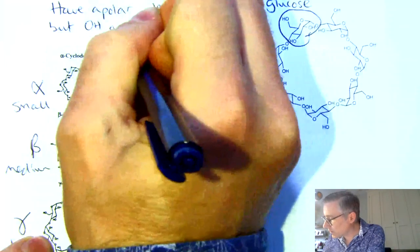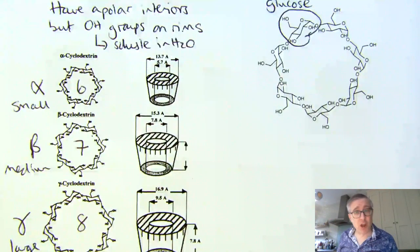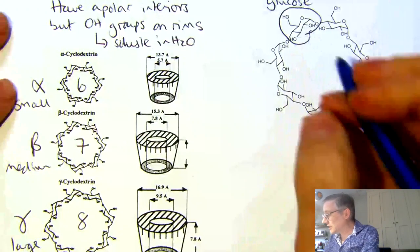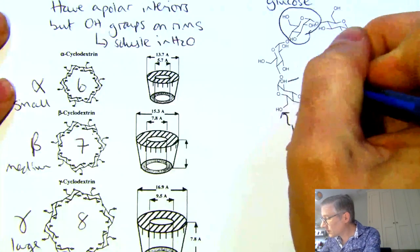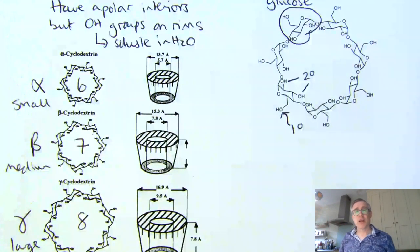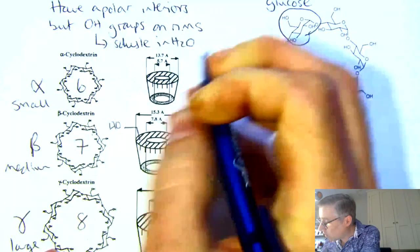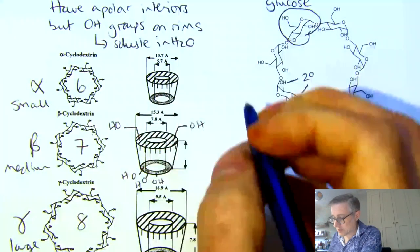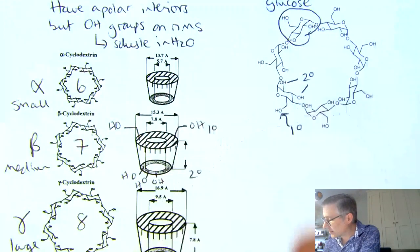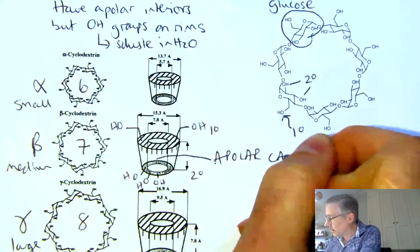They have apolar interiors but OH groups on the rims. These OH groups mean that they're really nicely soluble in water. From the structure of the glucose, we have some primary OH groups and some secondary OH groups — each sugar has one primary and two secondary. The primary alcohols end up on one rim and the secondaries on the other, with the apolar cavity inside.